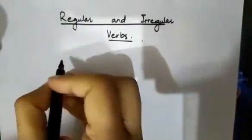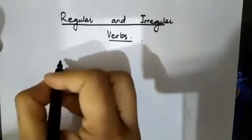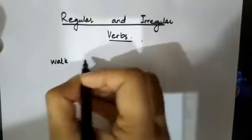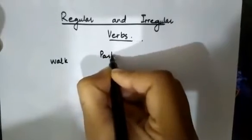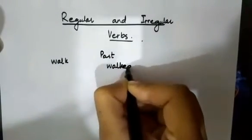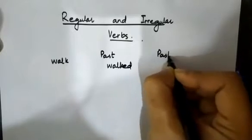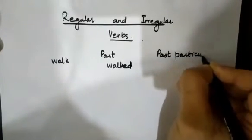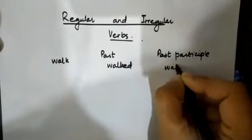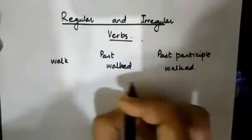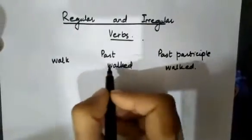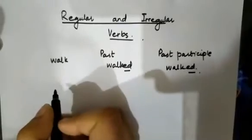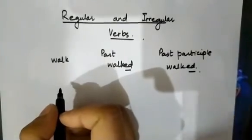For example, let's see the example walk. Its past form was walked and past participle form was walked. So there are some verbs in past and they end with ed or d.